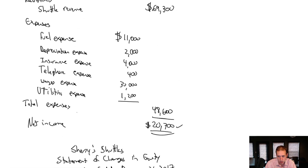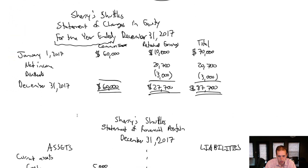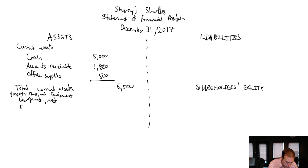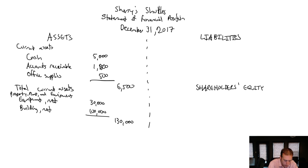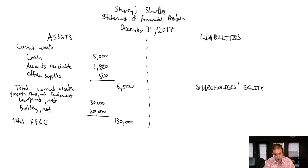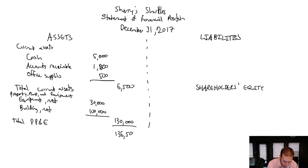Equipment was $30,000 and the building was $100,000. $30,000 plus $100,000 is $130,000 — that is our total property, plant, and equipment. Your prof might be a stickler and make you write that out fully; I'm just abbreviating to save time. So our grand total for assets: current assets of $6,500 plus long-term assets of $130,000 gives us total assets of $136,500. Double underline any bottom line.